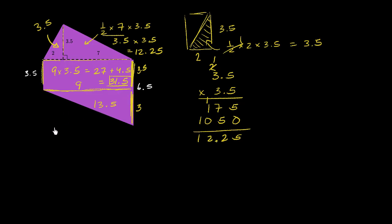And so to find the area of the entire thing, we just have to sum up these areas. So we have 31.5 plus 13.5 plus 12.25 plus 3.5. So we have 5 plus 5 is 10 plus 7 is 17. 1 plus 1 is 2 plus 3 is 5 plus 2 is 7 plus 3 is 10. 1 plus 3 is 4 plus 1 is 5 plus 1 is 6. So we get a total area for this figure of 60.75 square units.